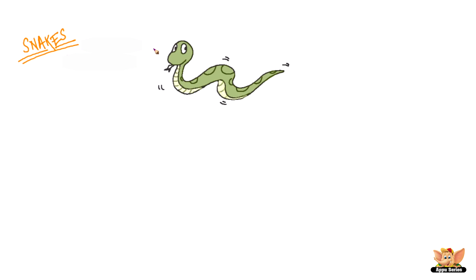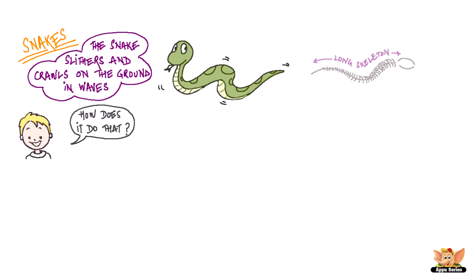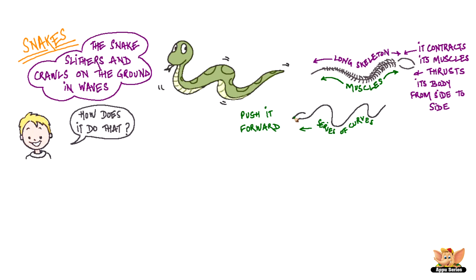Snakes. The snake slithers and crawls on the ground in waves. How does it do that? A snake has a long skeleton with thin muscles all along its length. Starting at the neck, it contracts its muscles and thrusts its body from side to side. This creates a series of curves and that's what pushes it forward.